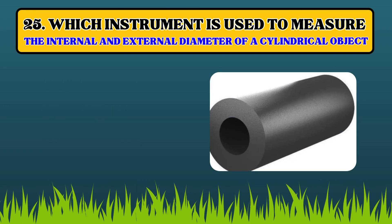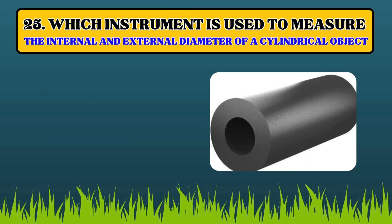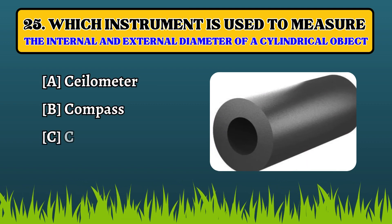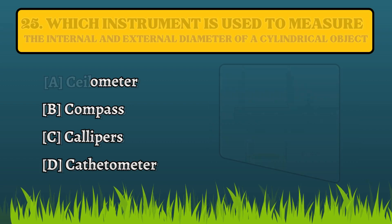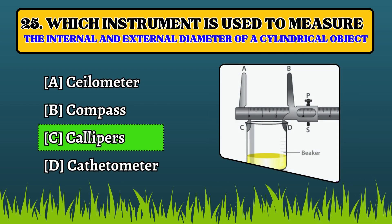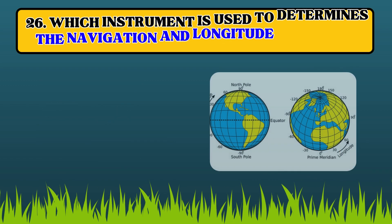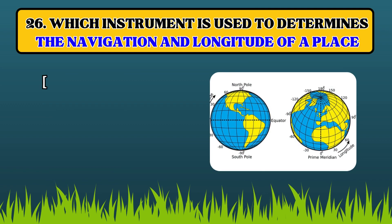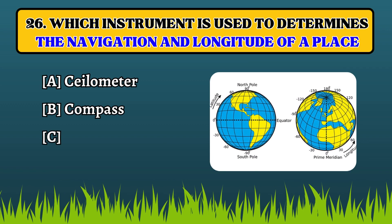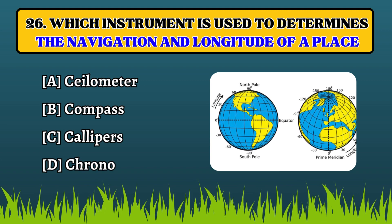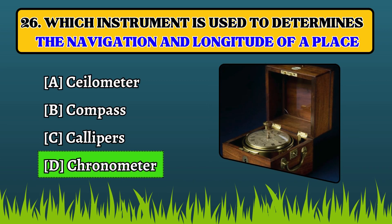Which instrument is used to measure the internal and external diameter of a cylindrical object? Calipers. Which instrument is used to determine the navigation and longitude of a place? Chronometer.